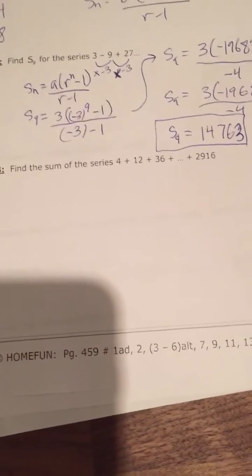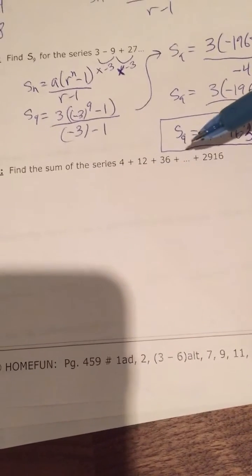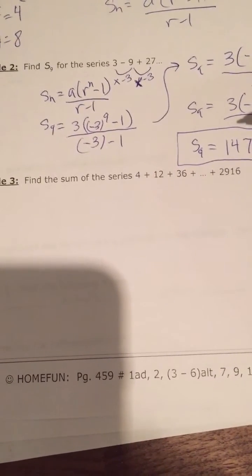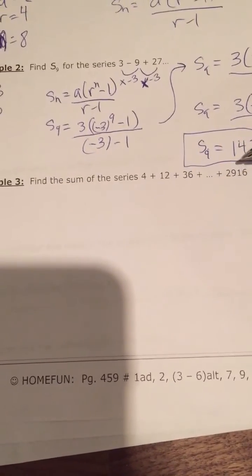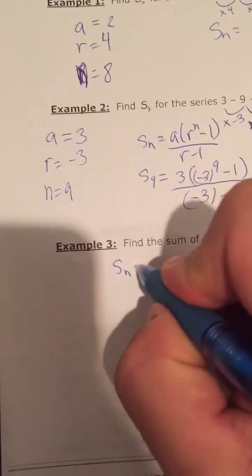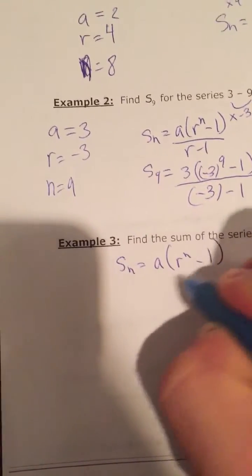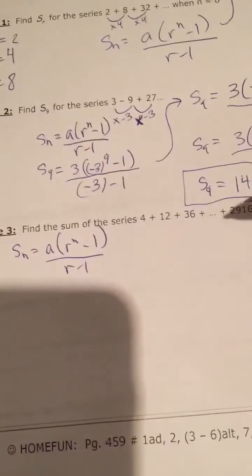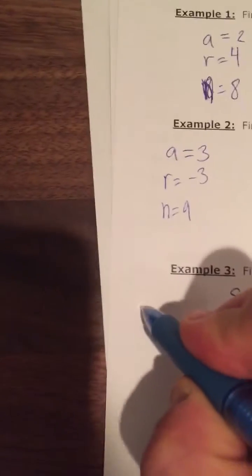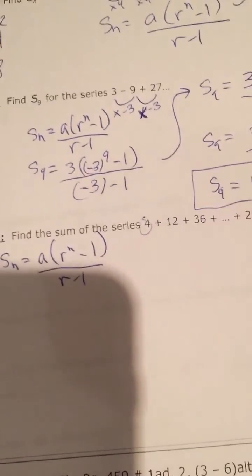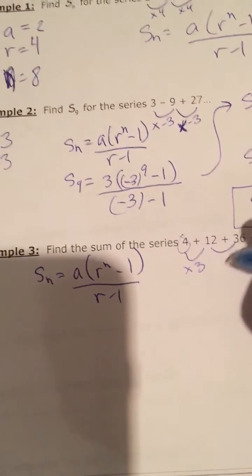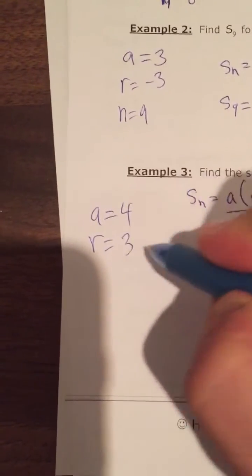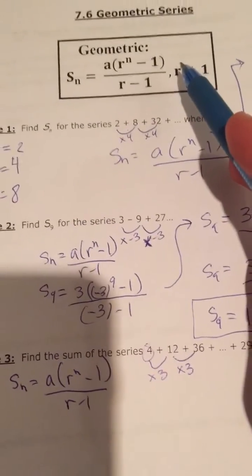Example 3: find the sum of the series 4 plus 12 plus 36 plus dot dot dot plus 2,916. We had a problem similar to this with arithmetic series. To add all these up, we use the Sn formula: Sn equals A times R to the N minus 1, all over R minus 1. The first number is 4, and there is a common ratio of 3 — you always multiply by 3 to get to the next term, so this is geometric.